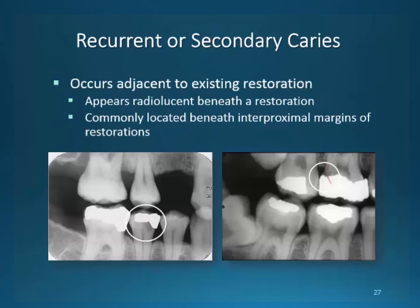Recurring and secondary decay appears around restorative material. This decay can be attributed to poor oral hygiene, diet, ill-fitting restorations, or restorations performed without complete decay removal. They are found around the margins of restorations and fillings. In the early stages, they are difficult to detect because of what we call the mock band effect that occurs between the metal restoration and the tooth structure.